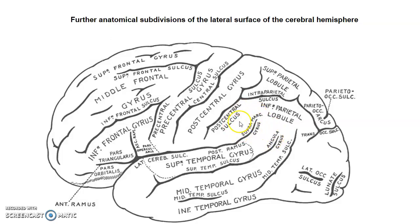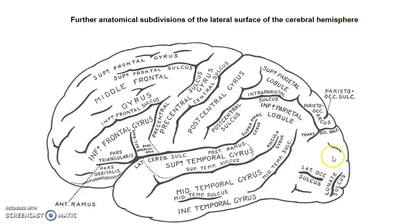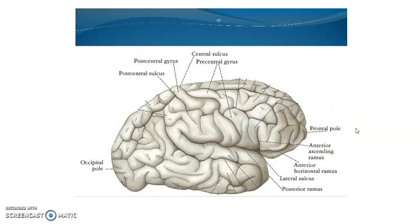The supramarginal gyrus forms what we call Wernicke's area. The temporal lobe is separated from the frontal and parietal lobes by the lateral fissure, and the temporal gyrus is divided into superior temporal gyrus, middle temporal gyrus, and inferior temporal gyrus. The occipital gyrus has a lunate sulcus, and the different parts will be appreciated in subsequent slides.